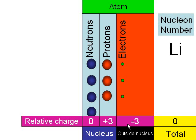The nucleon number, sometimes called the mass number, is the number of parts inside the nucleus. Here we can see that we've got four neutrons and three protons, therefore the nucleon number is seven.